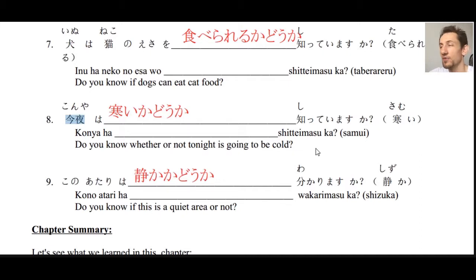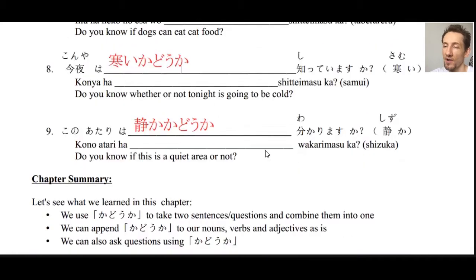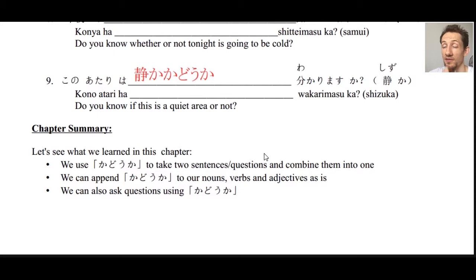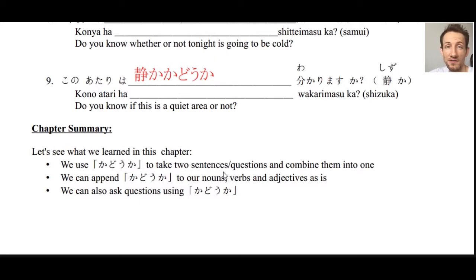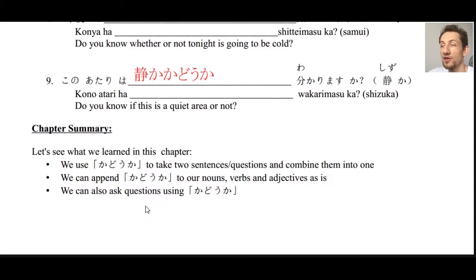And that's it — a simple exercise just adding かどうか to a verb, adjective, or noun, but this is extremely useful. The more you write it, the easier it will get, so be sure to write these down and practice until you can do it without thinking. To summarize: we learned that we can use かどうか to take two sentences or questions and combine them into one, making a much more natural-sounding way of speaking. We can append かどうか to nouns, verbs, and adjectives, and we can both make statements and ask questions.